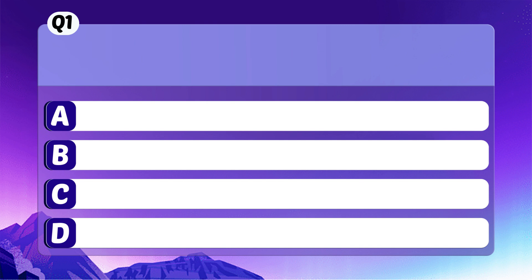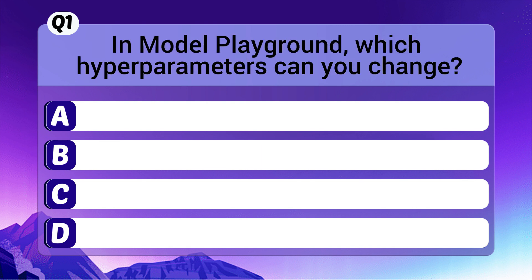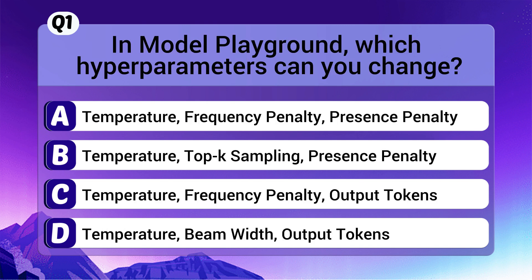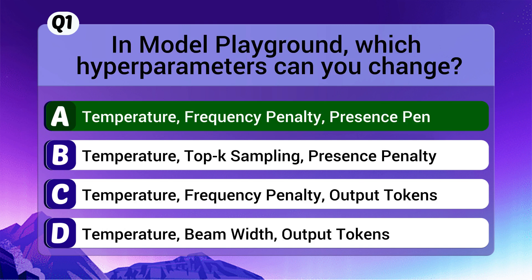Question 1: In Model Playground, which hyperparameters can you change? The correct answer is A: Temperature, frequency penalty, and presence penalty.